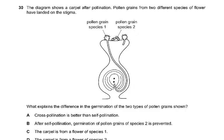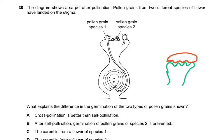Question number 30: the diagram shows a carpel after pollination. Pollen grains from two different species of flower have landed on the stigma. For pollen grain of species one, the pollen tube has developed. For pollen grain of species two, no pollen tube has developed — meaning it is from a different species. Pollen from a rose, a daisy, or a lily could land on a stigma, but only the pollen of the plant's own species will germinate because the stigma has receptors on it.